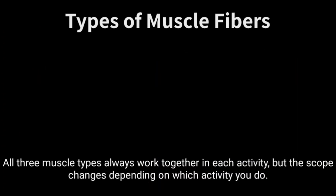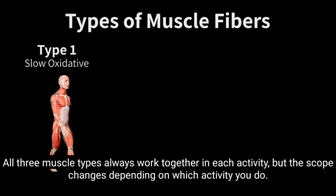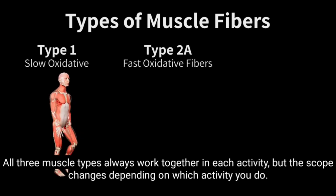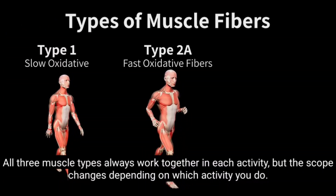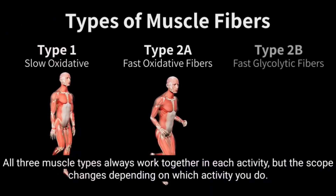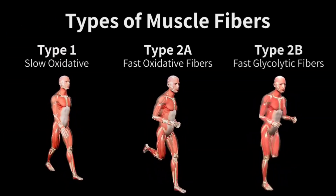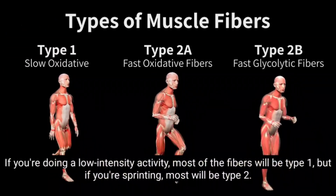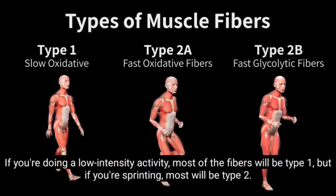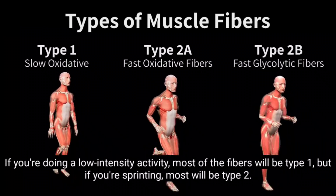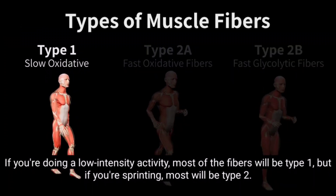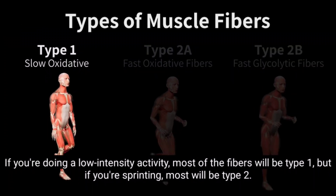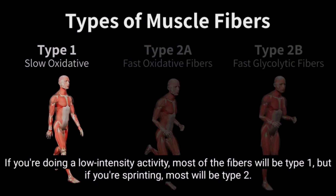All three muscle types always work together in each activity, but the scope changes depending on which activity you do. If you're doing a low intensity activity, most of the fibers will be type 1, but if you're sprinting, most will be type 2.